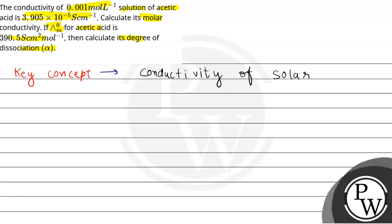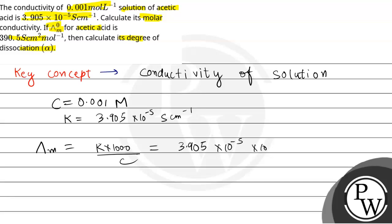We have to calculate molar conductivity. So molar conductivity is λm = κ × 1000 divided by concentration or molarity. So putting values here: 3.905 × 10⁻⁵ × 1000 divided by 10⁻² molar. So here 10⁻² molar gives us λm = 39.05 S cm² mol⁻¹.